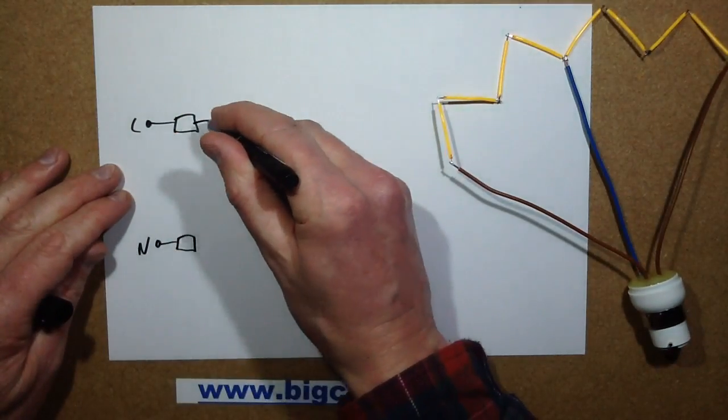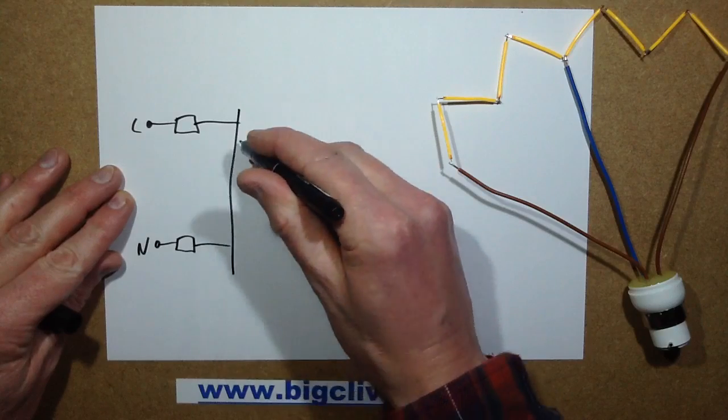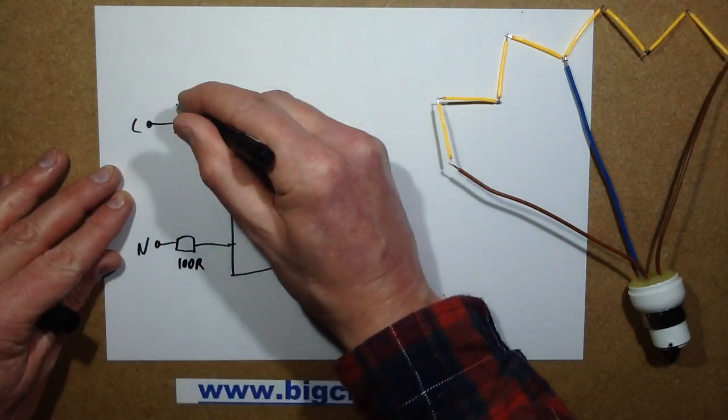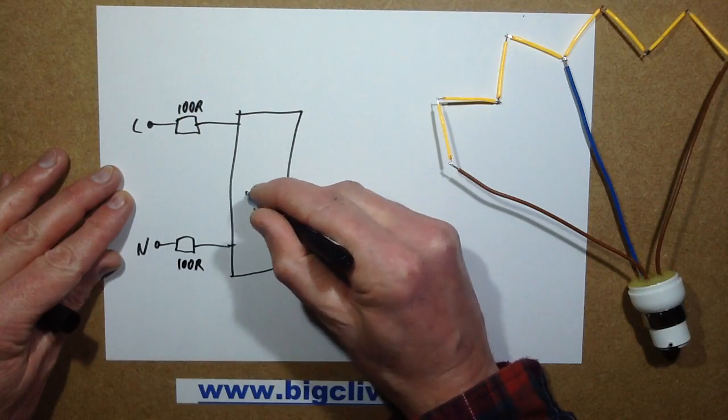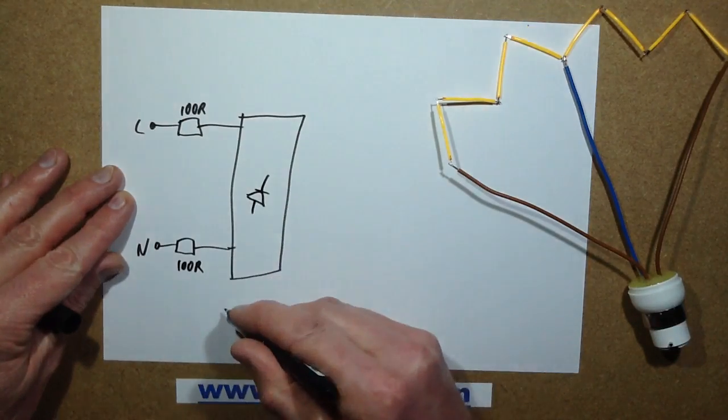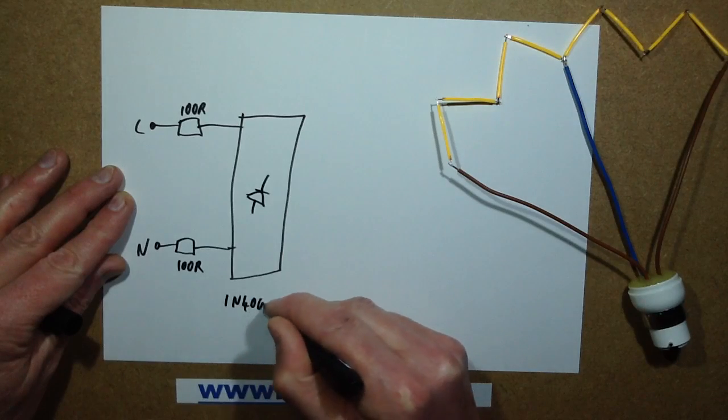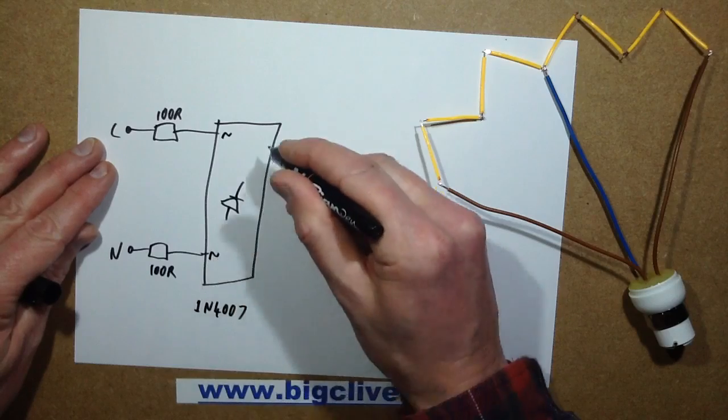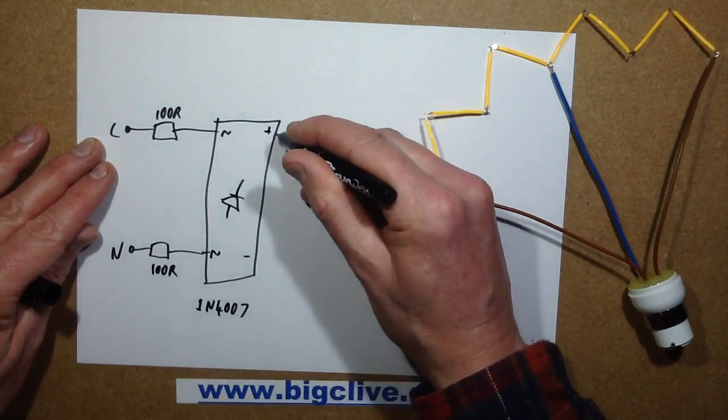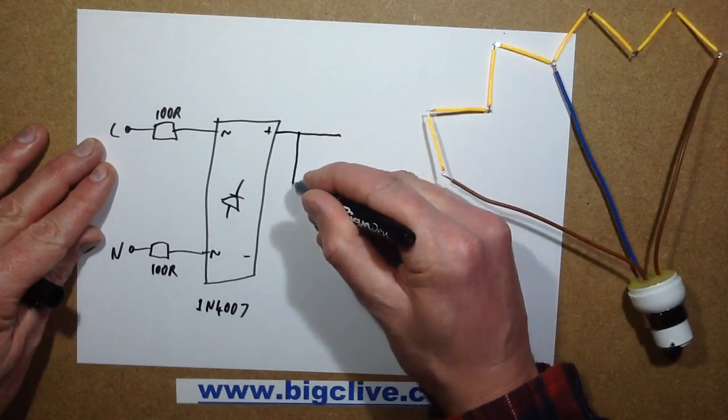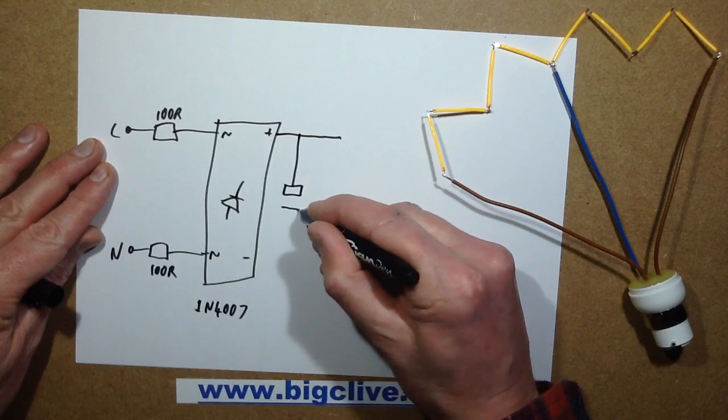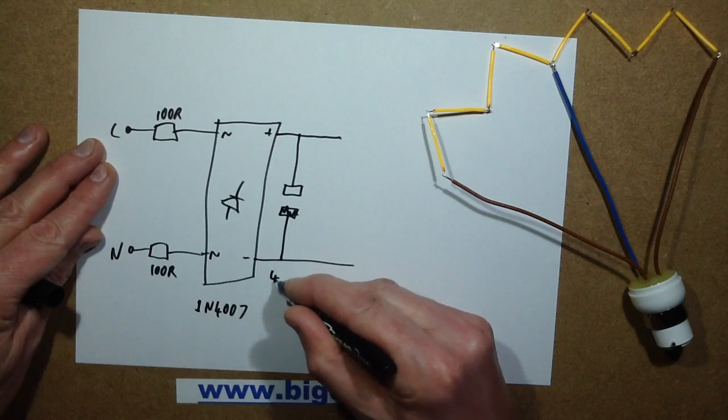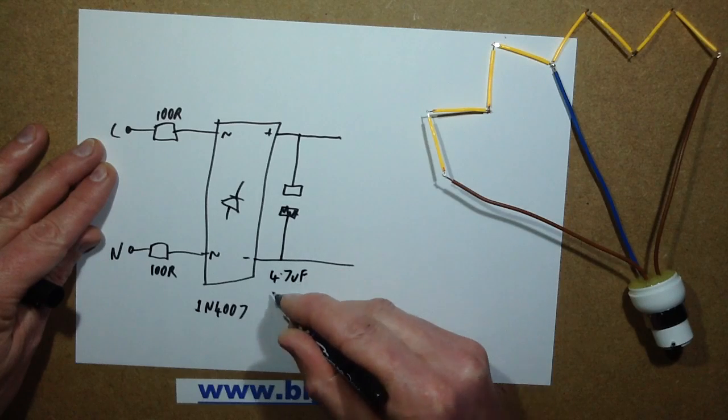So I used two resistors. I used a bridge rectifier made from discrete 1N4007 diodes. So that's 100 ohm, 100 ohm, bridge rectifier, 1N4007 diodes. So that's AC, AC plus, minus, and then on the output I put a capacitor, 4.7 microfarad, 400 volts.